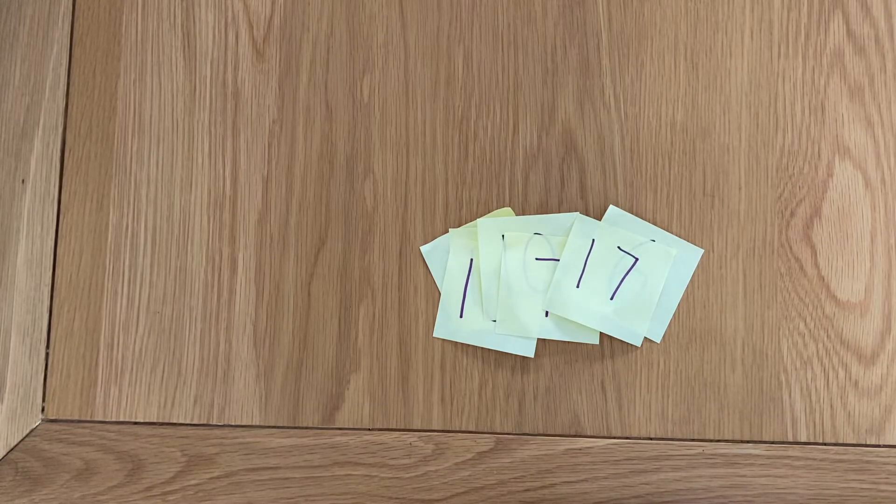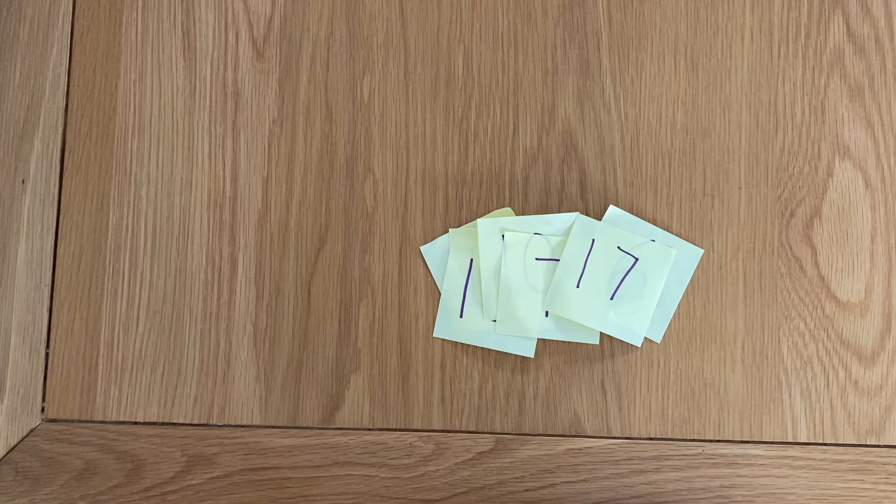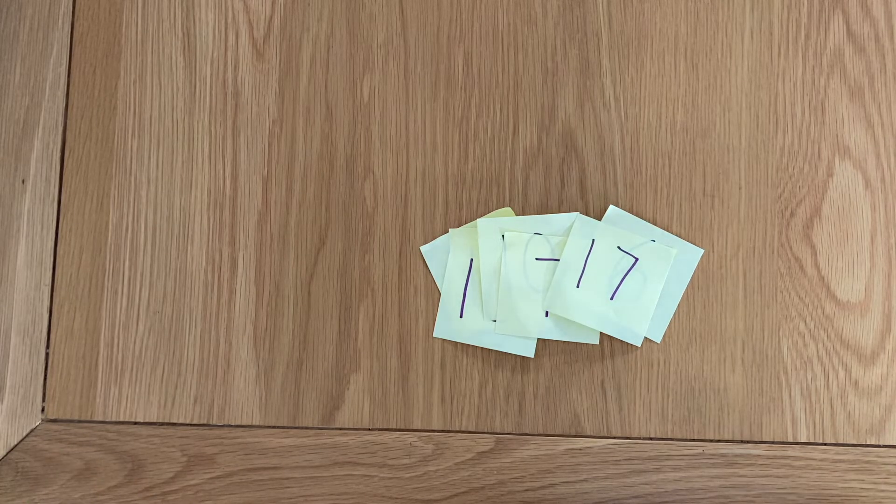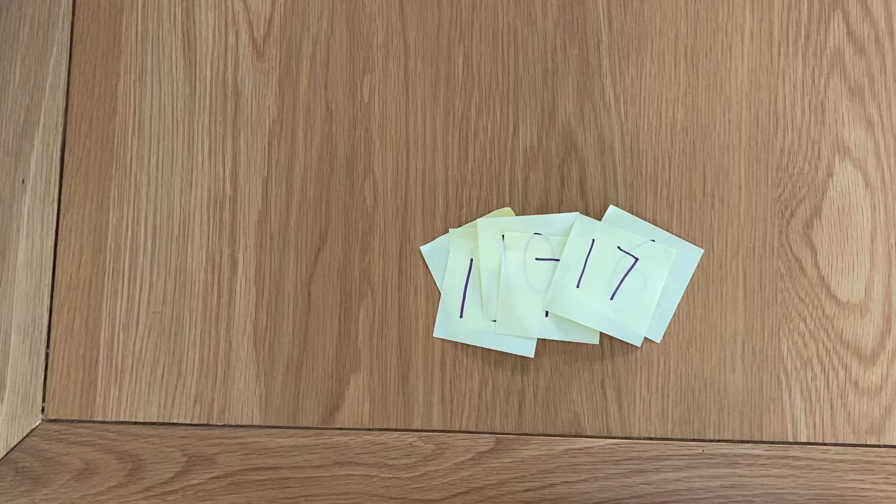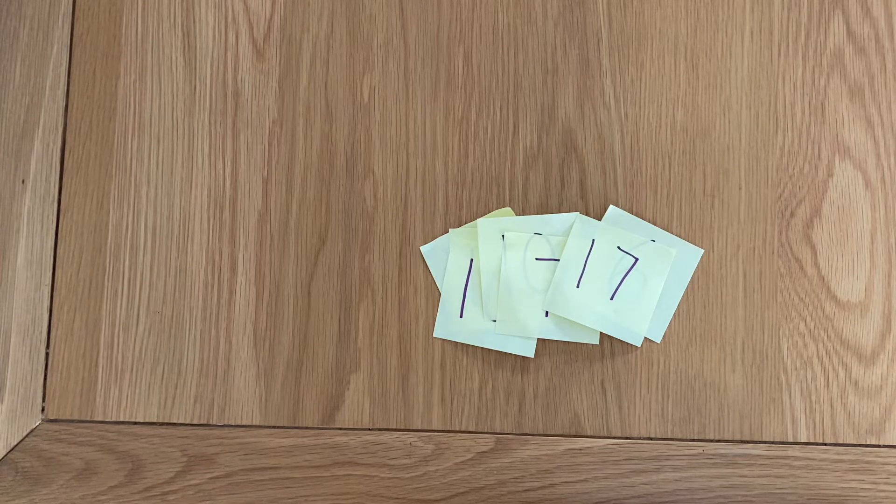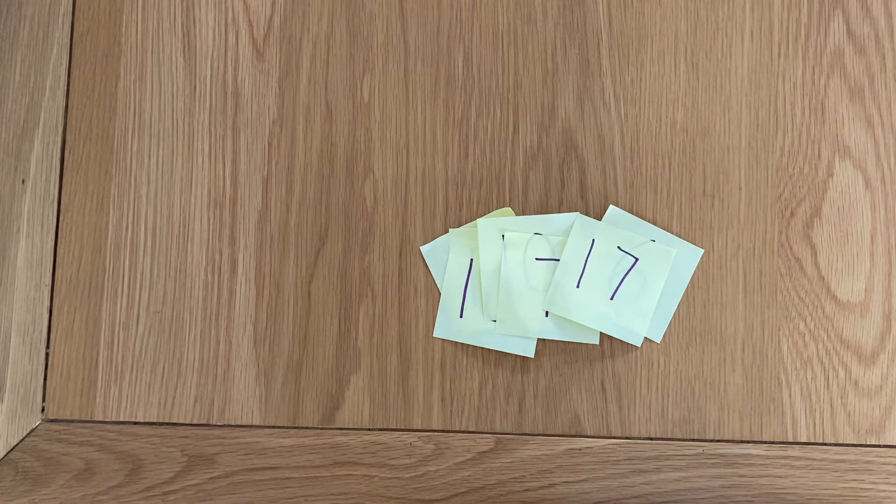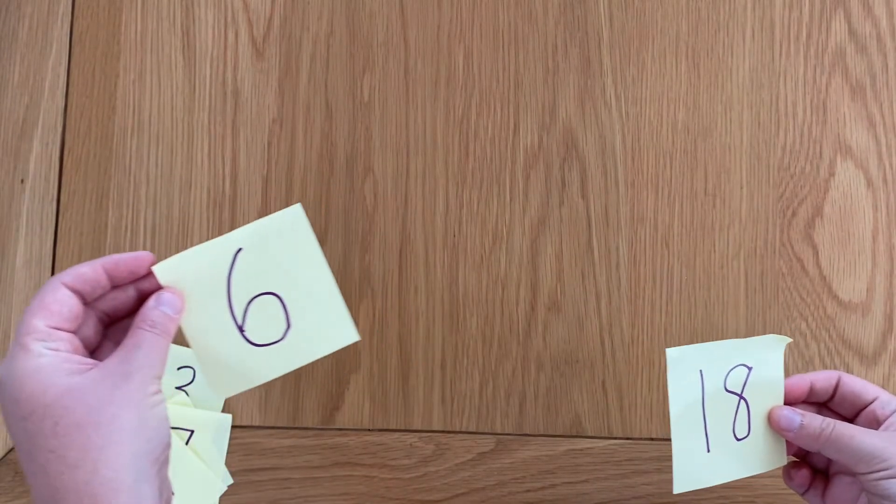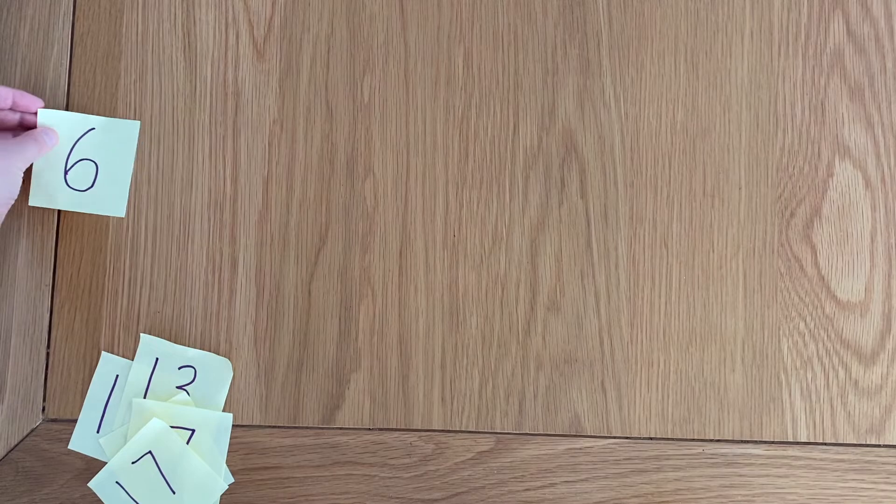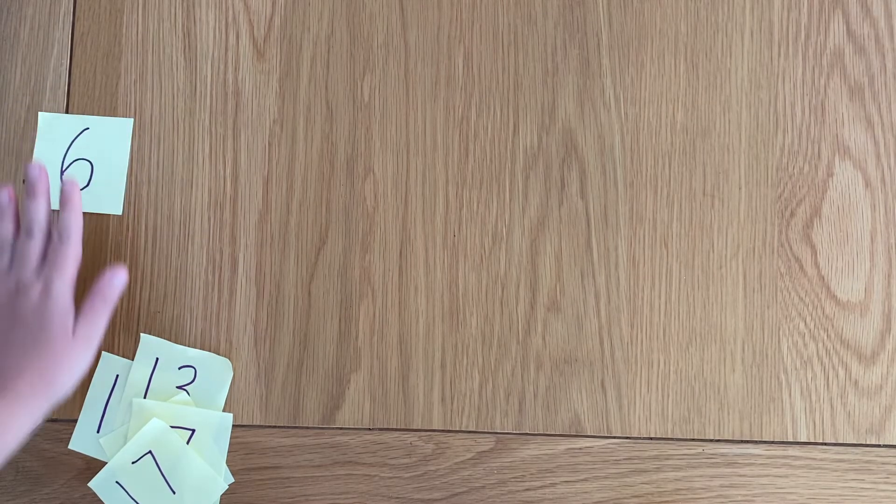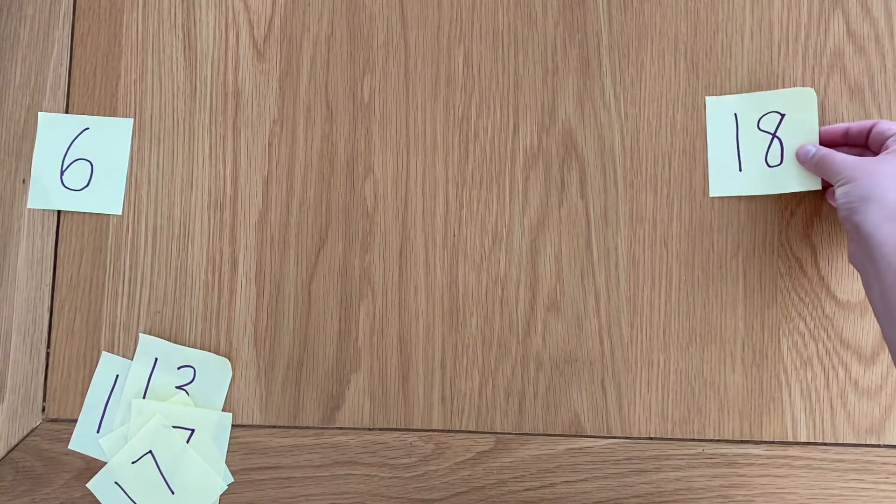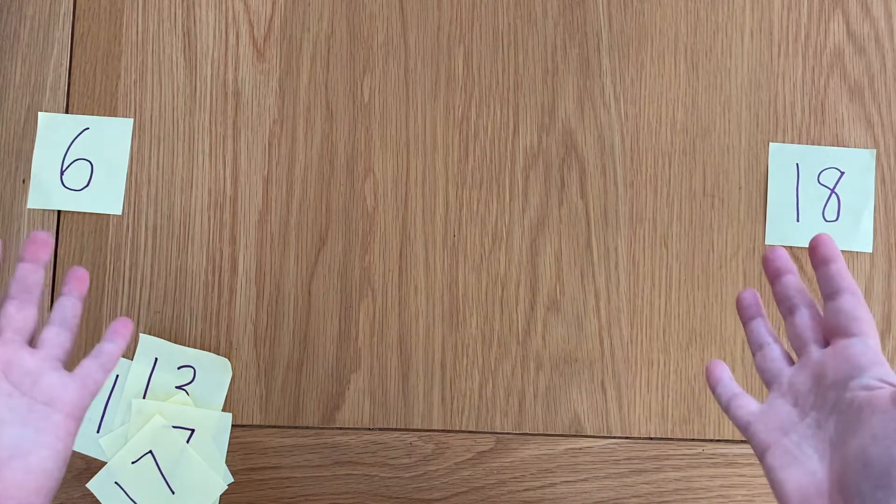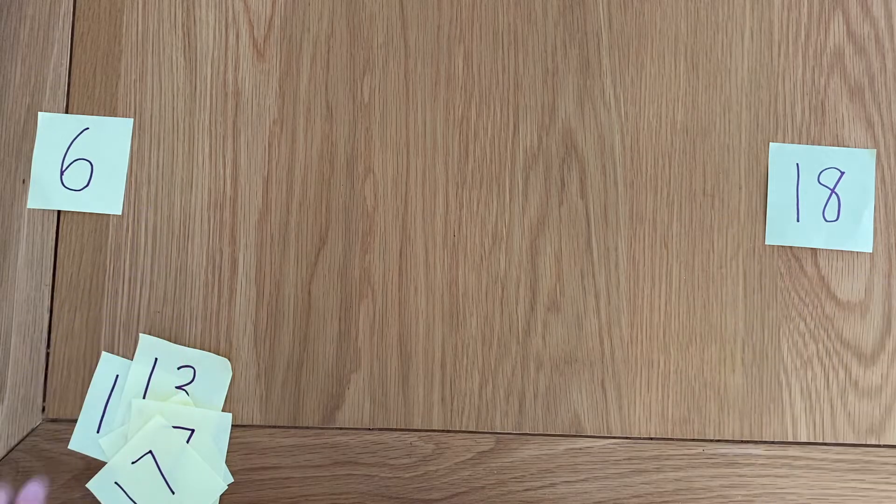So then what we do is we create a number range and that number range is going to form our number line. So what we would do is we would talk about what is the smallest estimate in the class, what is the largest estimate in the class and then we use that to create our number line. So in this instance the smallest estimate that we had was six so we're going to put that all the way over here at the beginning of our number line and the largest estimate that we have is 18. So we would go ahead and put that over here and then we know that all of the other estimates have to go somewhere in between.